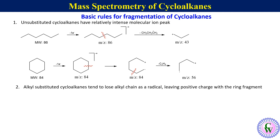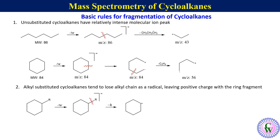Alkyl-substituted cycloalkanes tend to lose the alkyl chain as a radical, leaving a positive charge on the ring fragment. For example, if we have an alkyl cycloalkane, removal of one electron gives the molecular ion. It undergoes alpha cleavage to remove the alkyl group as a radical, leading to the formation of a cyclohexyl carbocation with an m/z value of 83.